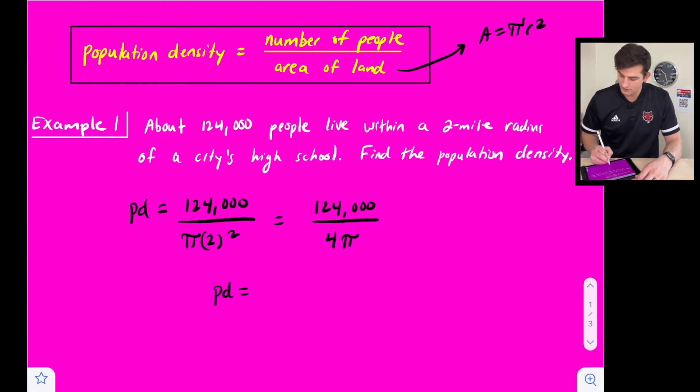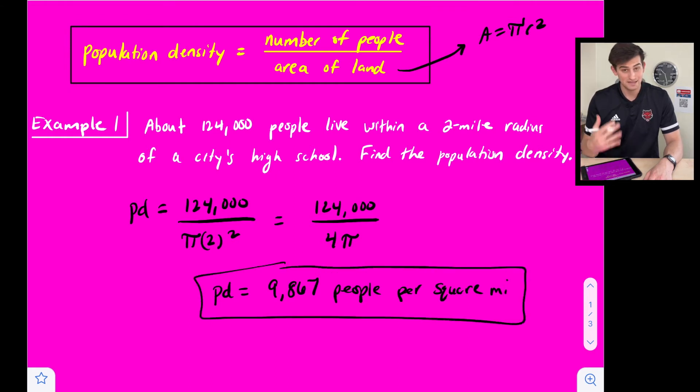So our population density is equal to 9,867 and it's a decimal so we'll say about 9,867 people per square mile. So that's how we calculate population density.